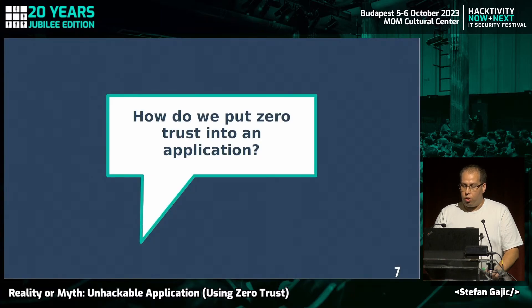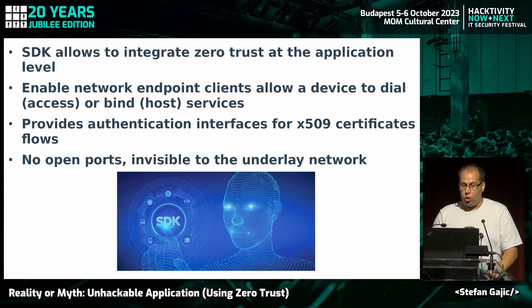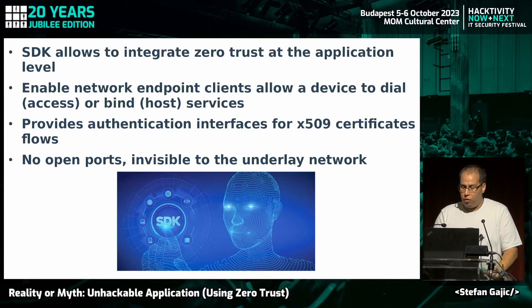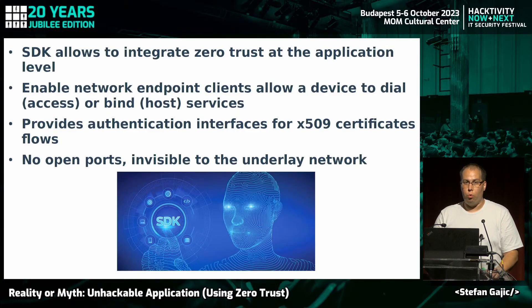How do we put zero trust into an application? We can use SDKs. SDKs allow us to integrate zero trust at the application level. It enables network endpoint clients, allows a device to dial, access, or bind host a service. It provides an authentication interface for x509 certificate flows. Most importantly: no open ports, completely invisible to the underlay network. This is all great, but let's see some real-world code examples.